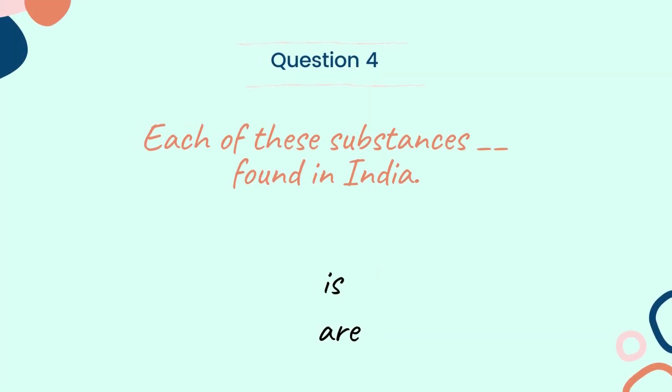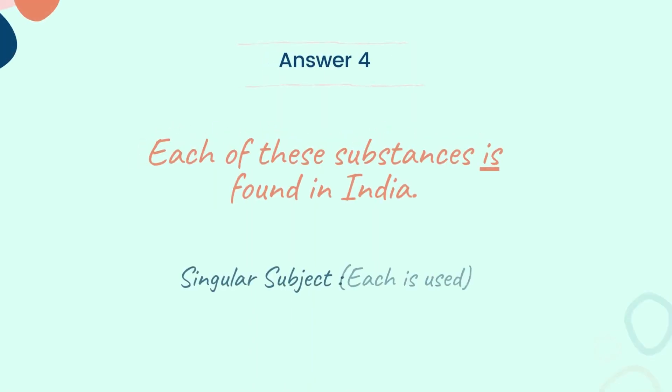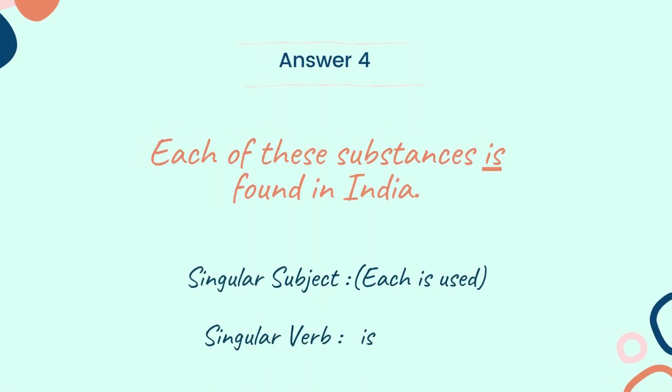Let's look into the next question. Question 4: 'Each of these substances dash found in India.' Choose the correct verb between the two words: is and are. And the answer is: Each of these substances is found in India. Here 'each' is used in the sentence, so the subject will be singular and the singular verb 'is' is used here.